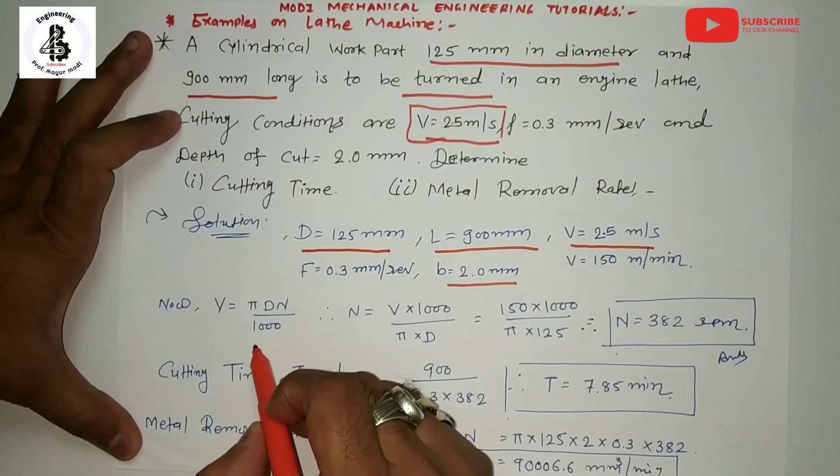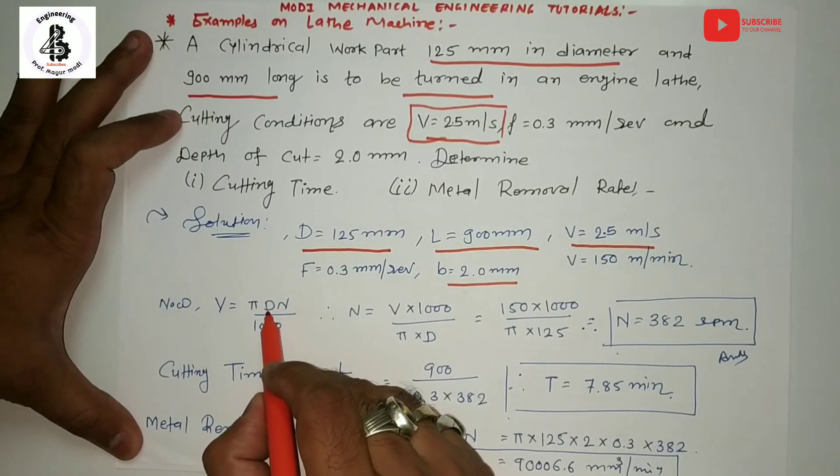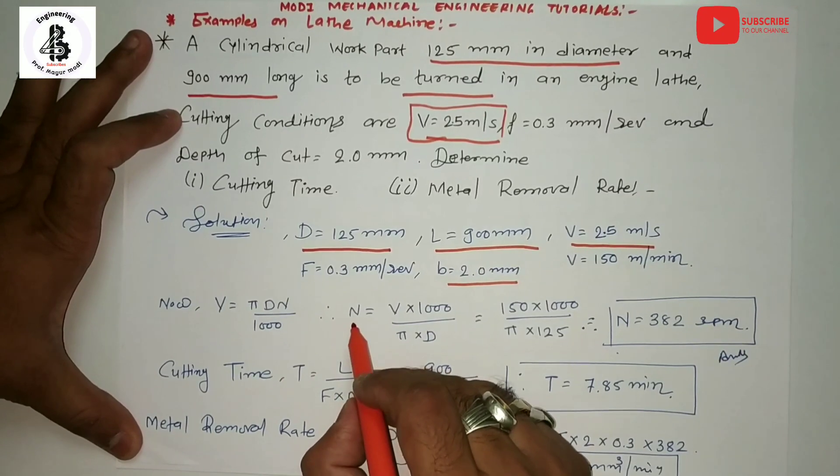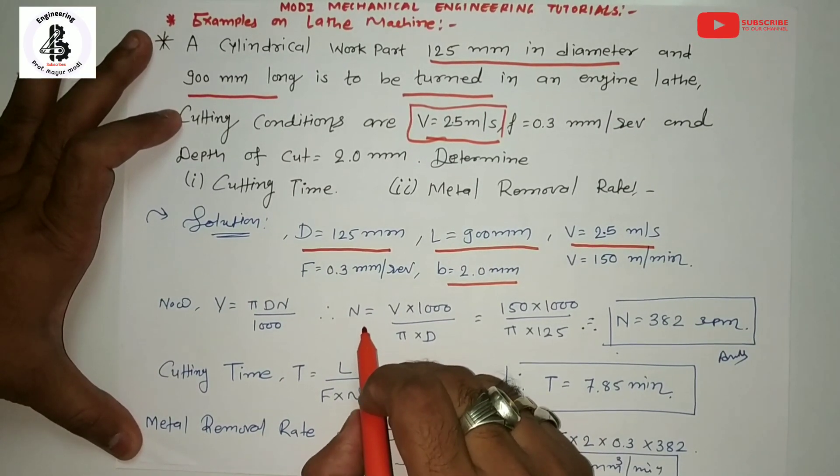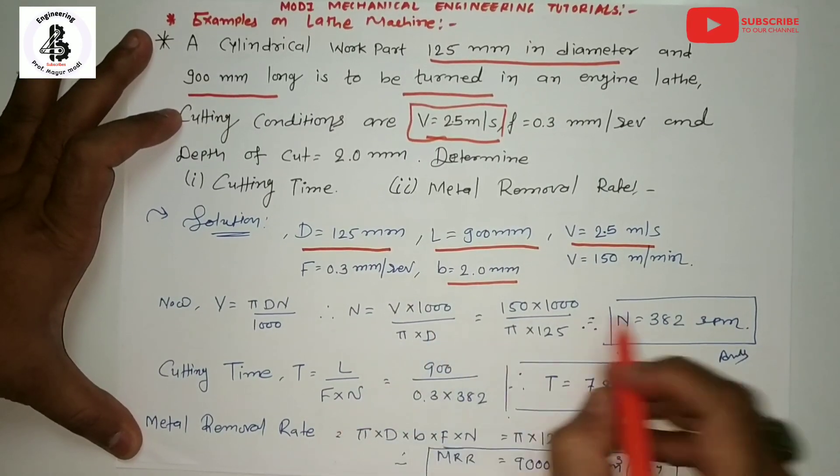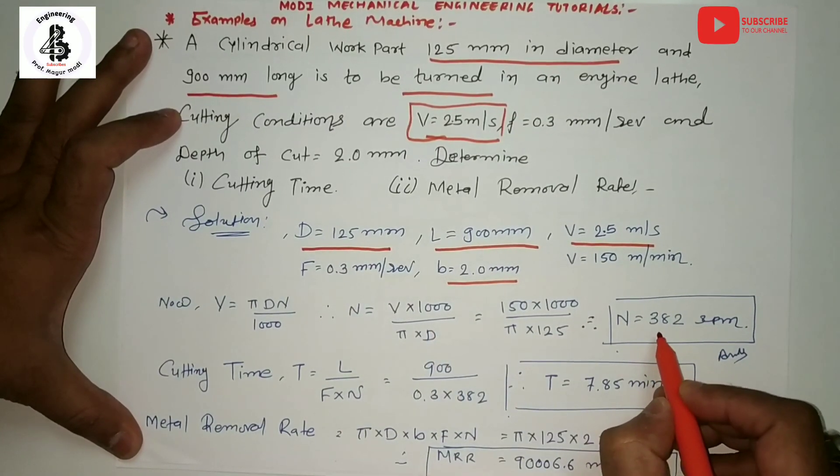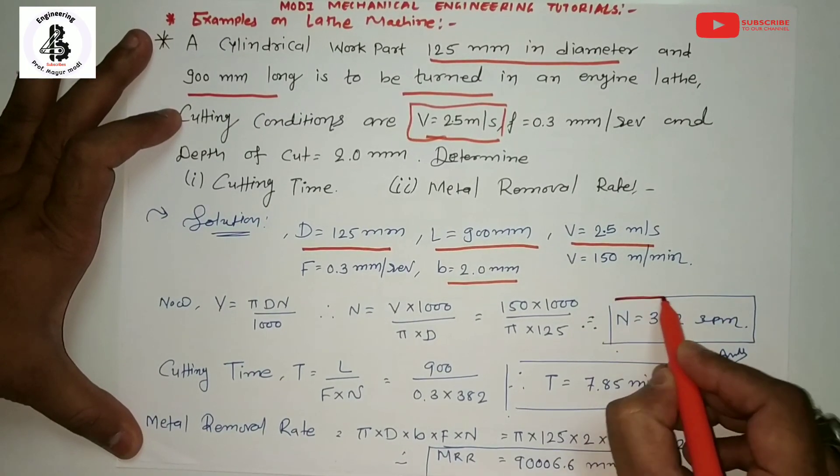V is given to you, diameter is given to you, so you should find the RPM or capital N which is the revolution per minute. Just put the value of V and D and you will get the answer N = 382 RPM. That much amount of RPM is required for the cutting.